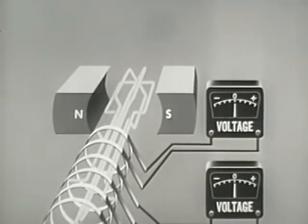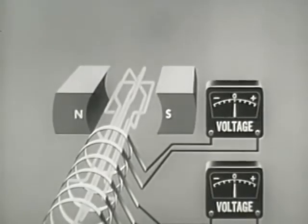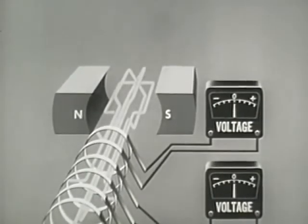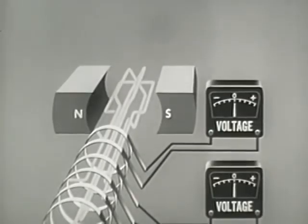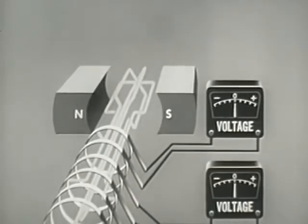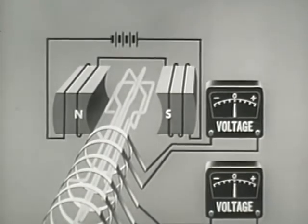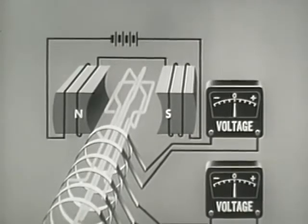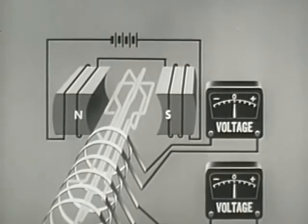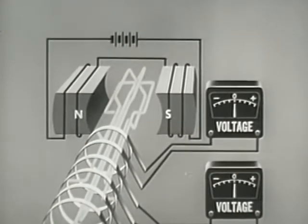Alternating current generators using electromagnetic fields cannot be self-excited. DC is needed to excite the field. In practice, a small DC generator set in tandem with the main machine in one housing does this.